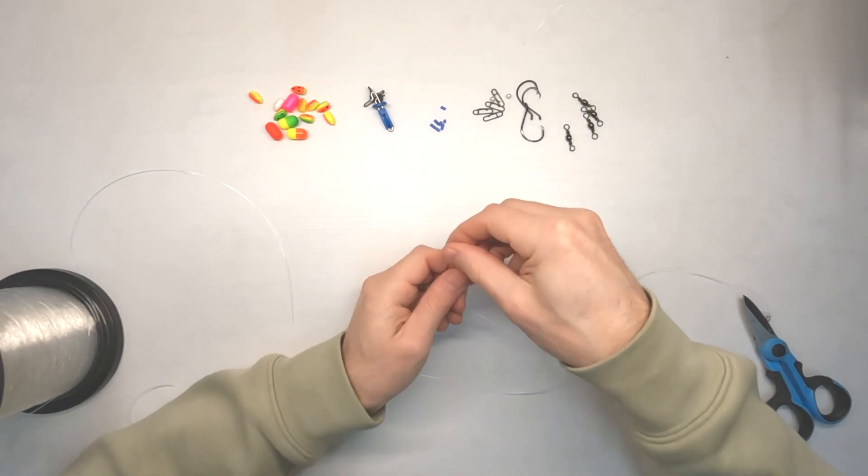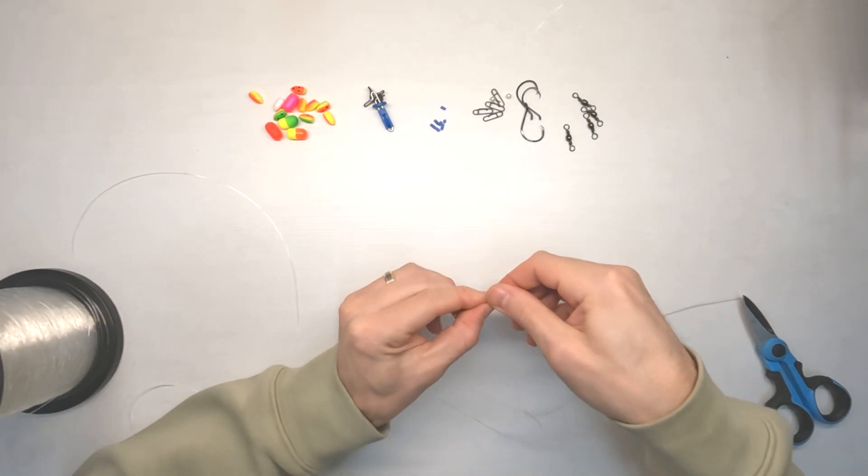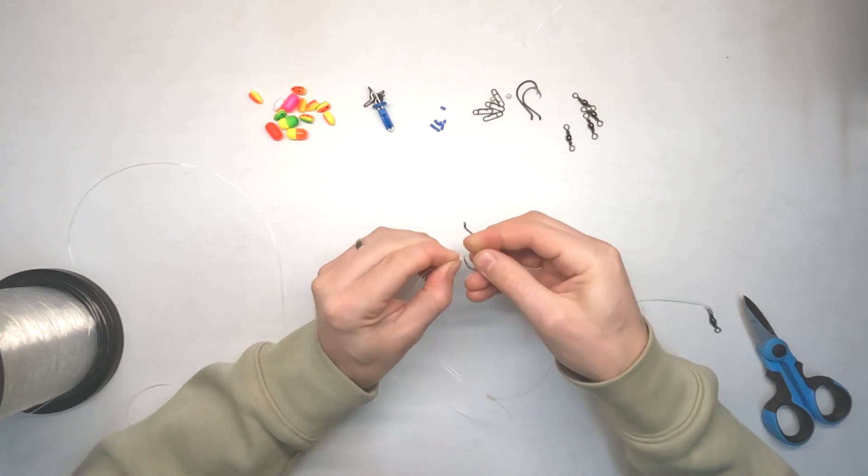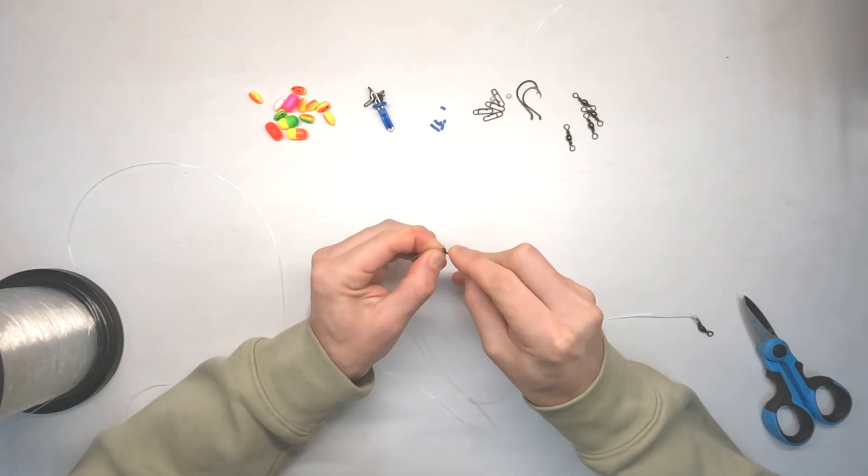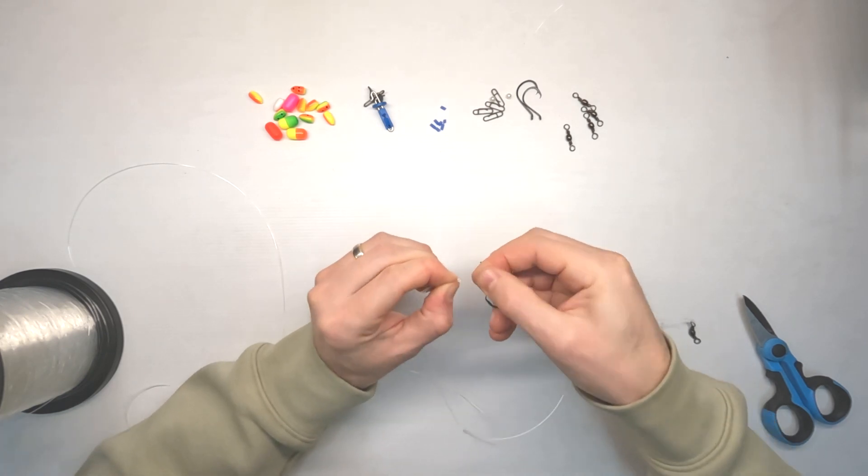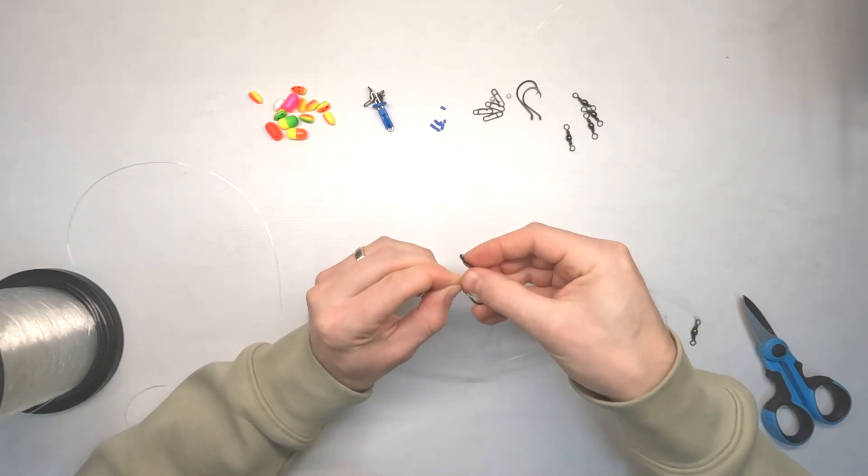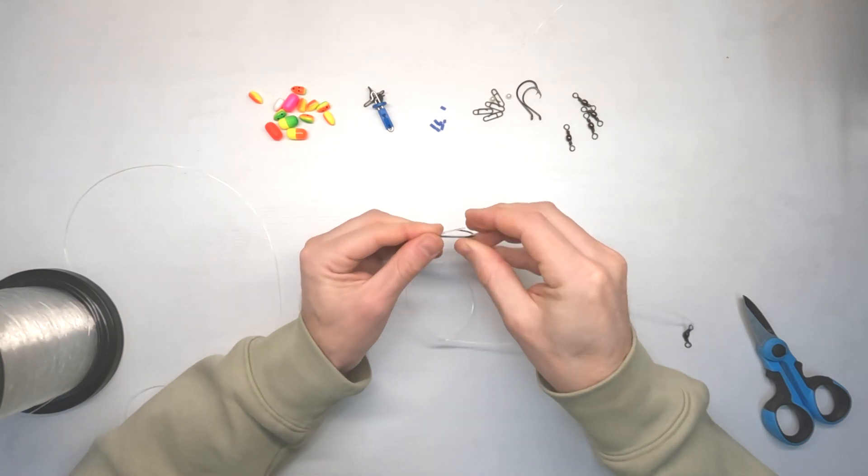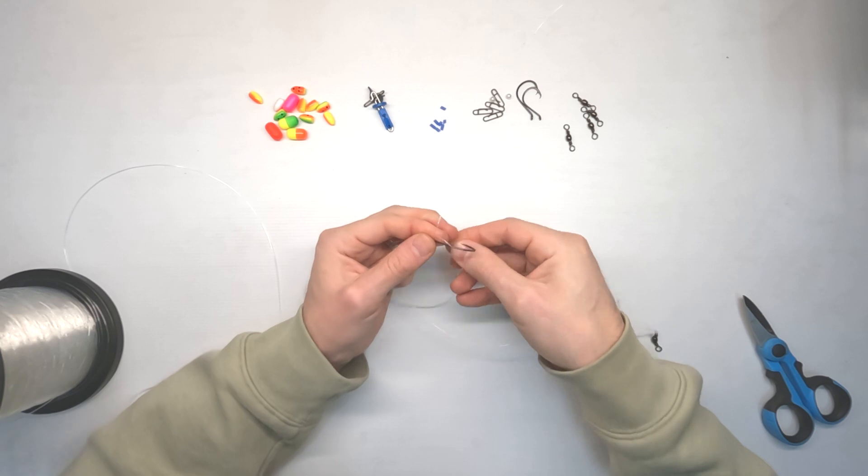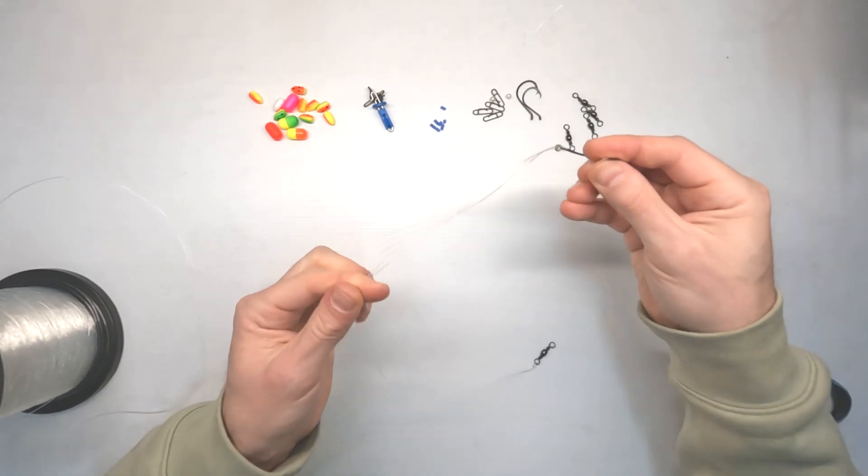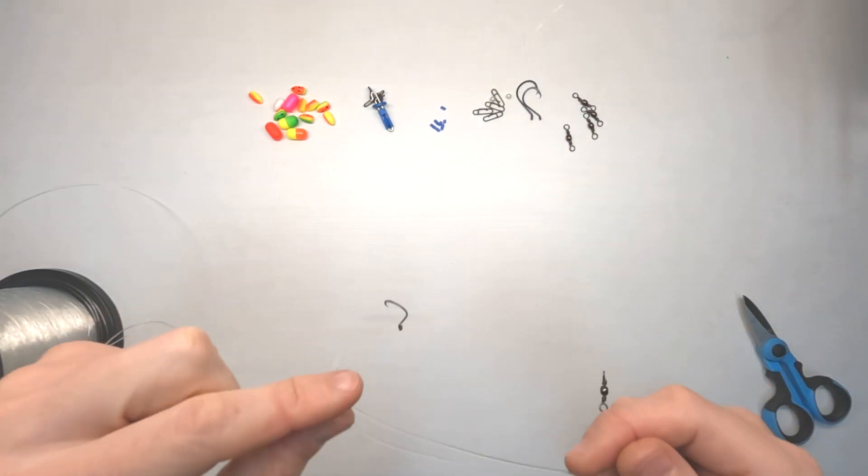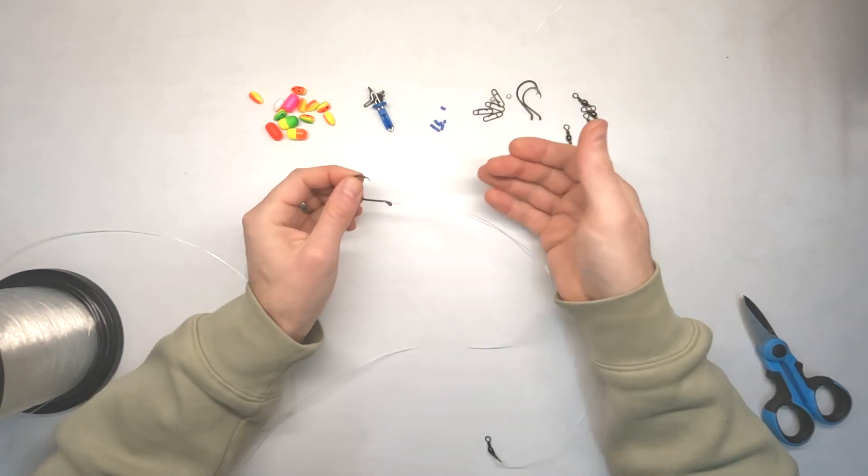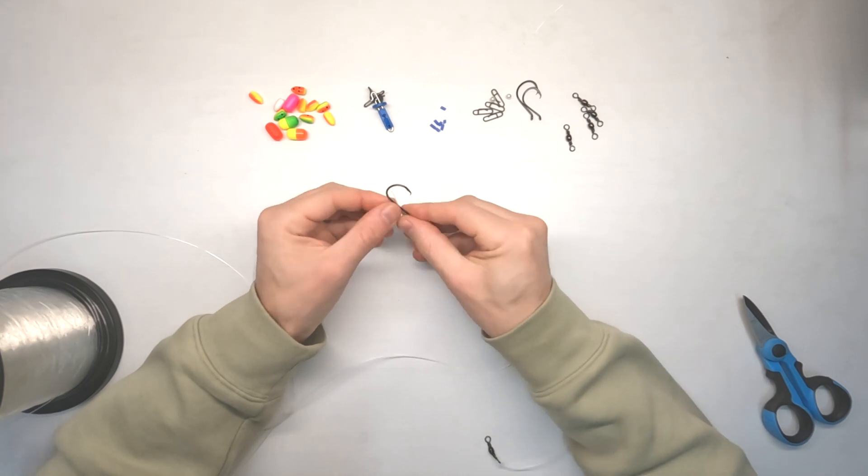Now you can if you wish just loop your hook on by pushing it through. If you pinch that together properly it'll go through the hook easy and then loop it over the hook, draw that up. You've got your hook sitting out like so.